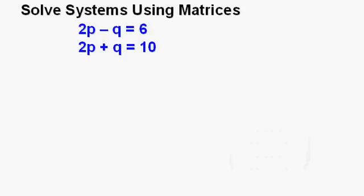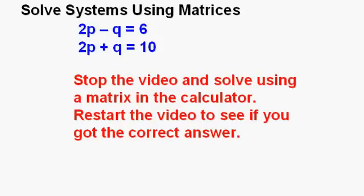Let's try another system of equations. This one is 2p minus q equals 6 and 2p plus q equals 10. Stop the video and solve the system using a matrix. Remember that you get to the matrix menu by pressing 2nd, then x to the negative 1 power. Go to the edit submenu first to enter the matrix, then go to math submenu to enter RREF, then solve by going to the name submenu for matrix A. Restart the video to see if you got the correct answer.